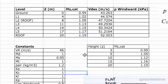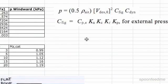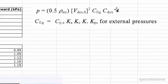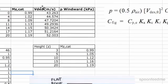Just to quickly recall the formula for pressure — it's written over here — it's 0.5 times the density of air, times V_des_theta squared, times Cfig, where Cfig is all of that, times C_dynamic. So all we need to do is literally multiply everything together.